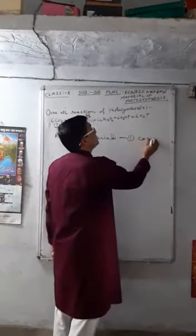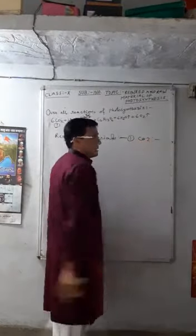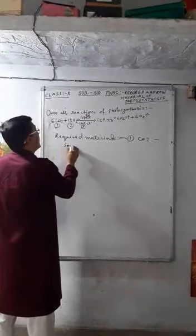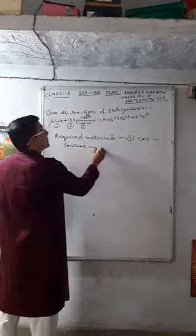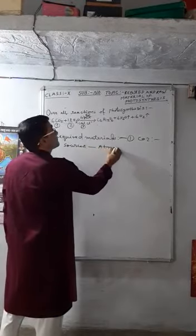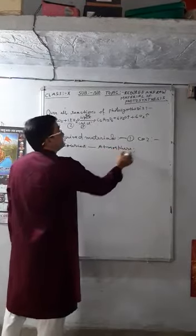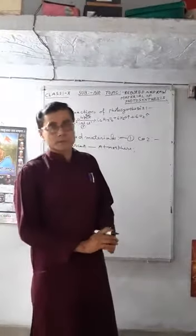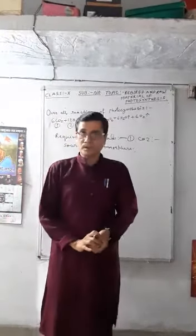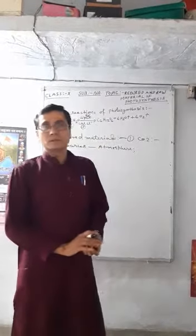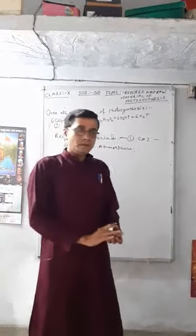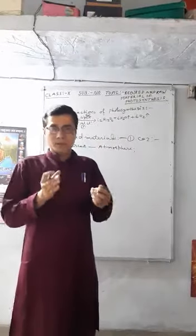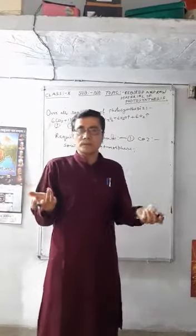The first required material is carbon dioxide, and its source is the atmosphere. The green plant takes carbon dioxide from the atmosphere through the stomata — a well-known fact discussed in lower classes — where stomata help in the exchange of gases, water vapor, etc.